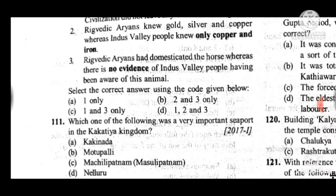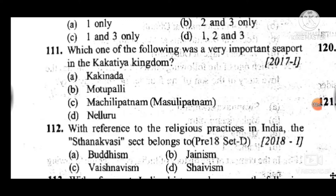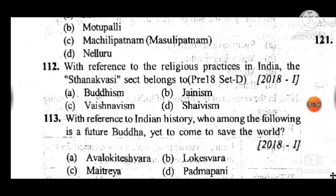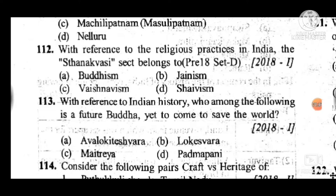Question 112: With reference to religious practices in India, the Shatanatha sect belonged to — answer is B, Jainism. Question 113: With reference to Indian history, who among the following is a future Buddha yet to come to save the world? Answer is C, Maitreya.